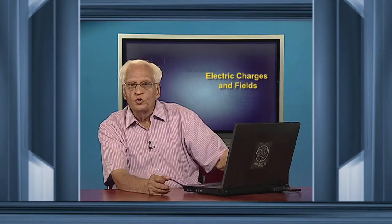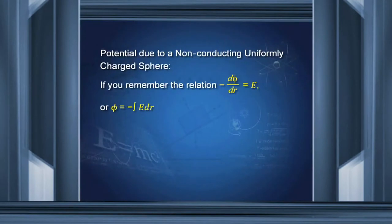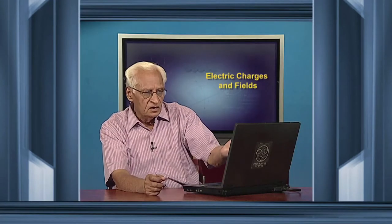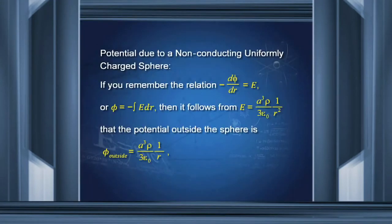How do we do that? Recall the relation between the electric field and the potential. Electric field is equal to minus dφ/dr. Therefore, φ is the integral of E·dr, so φ is minus the integral of E·dr.